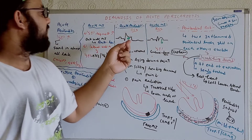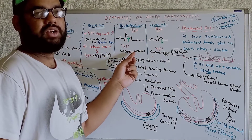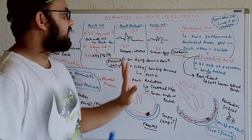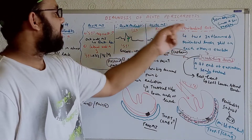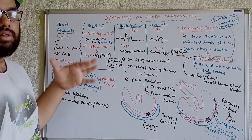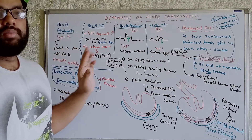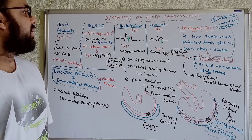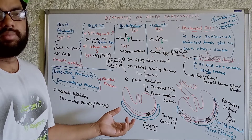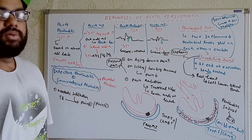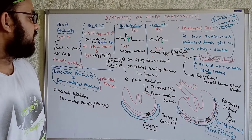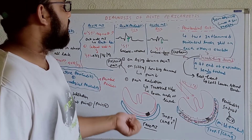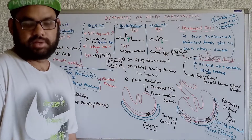So to summarize: in acute pericarditis, ST elevation is concave upward; in acute MI, it is concave downward. I've now covered chest pain, pericardial rub, and ECG changes. Pericardial effusion will be discussed along with treatment and management. If this video was helpful, please comment, and thanks for watching.